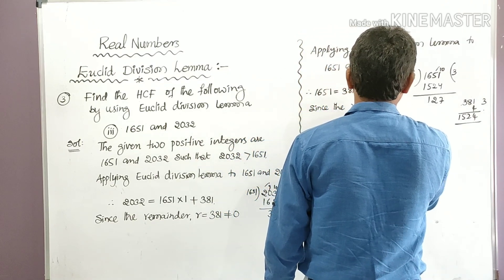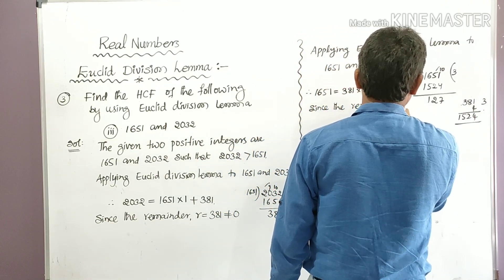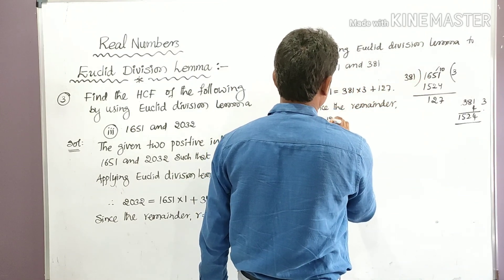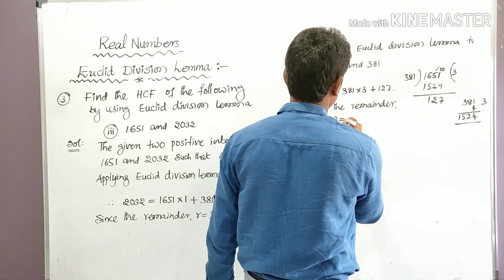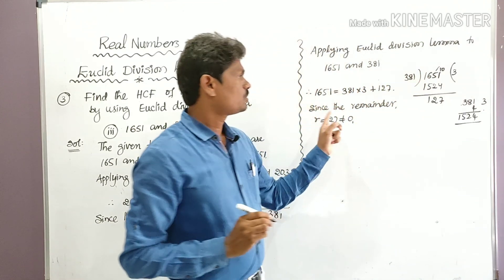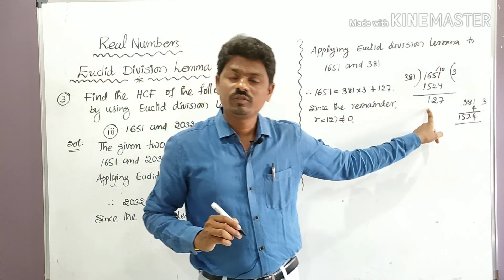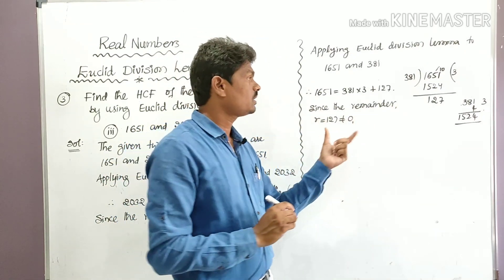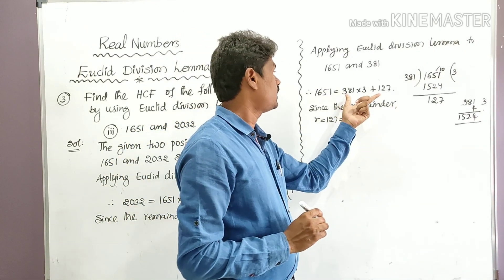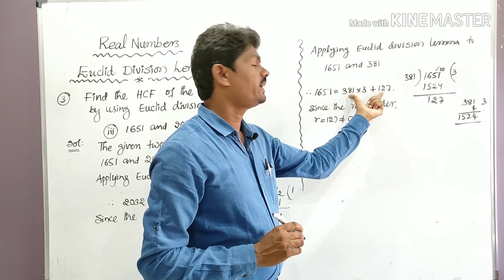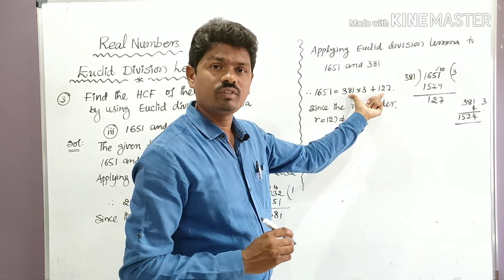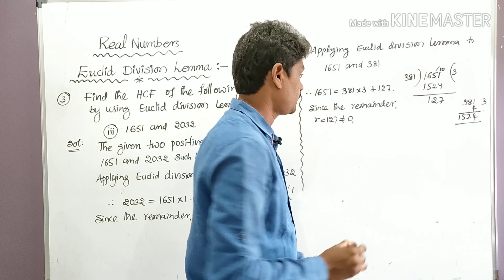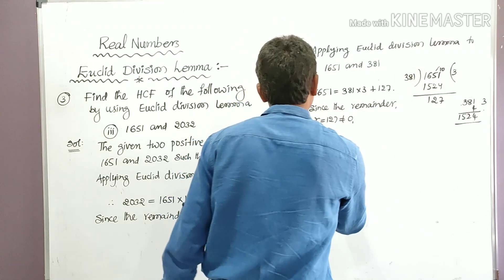Since the remainder r = 127, which is not equal to 0, we have to apply Euclid's Division Lemma again — this time to 381 and 127.